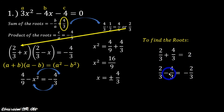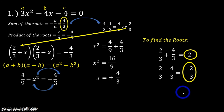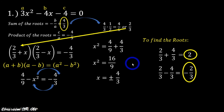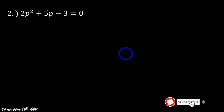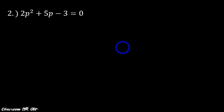Therefore, our roots are 2 and negative 2 thirds. If you substitute these roots into the original quadratic equation, it will give a true equation. You might say it would be easier to use factoring — and you're correct. But what is great about this method is that it is mechanical and can solve any quadratic equation, including those that cannot be factored.